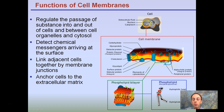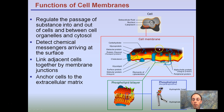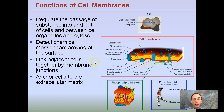The cytosol in this case would be the gray area here. It's important for cells to detect chemical messengers arriving at the surface — this is important for recognizing certain hormones or other substances. Cells also link adjacent cells together by membrane junctions and anchor cells to the extracellular matrix. There's a lot going on with the functions of our cell membrane, more than just creating a protective layer on the outside.